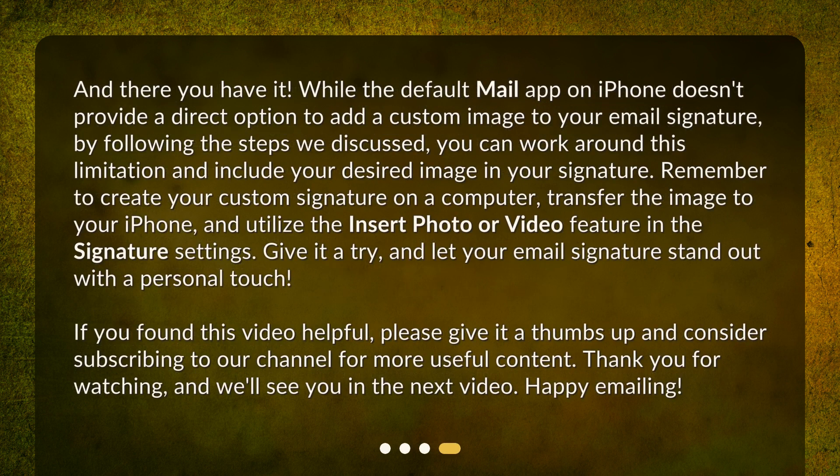And there you have it. While the default Mail app on iPhone doesn't provide a direct option to add a custom image to your email signature, by following the steps we discussed, you can work around this limitation and include your desired image in your signature. Remember to create your custom signature on a computer, transfer the image to your iPhone, and utilize the Insert Photo or Video feature in the Signature settings. Give it a try and let your email signature stand out with a personal touch.